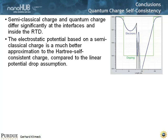Here are the key messages of this lecture. The semi-classical charge and quantum charge differ significantly at the interfaces and inside of the RTD — we kind of knew that, because the semi-classical charge has charge pile-up against the interface, so we know the charge should be recessed away from the interface. The electrostatic potential based on semi-classical charge is a much better approximation to the Hartree self-consistent charge; the two are in okay agreement and the IVs look rather similar, slightly different compared to a linear potential drop. That's why I always call these linear potential drops Mickey Mouse devices — they threw out the baby with the bathwater — because electrostatic potential in a device is the key insight. If your device model does not have good electrostatics, you can do all you want, you're never going to really match experimental data.